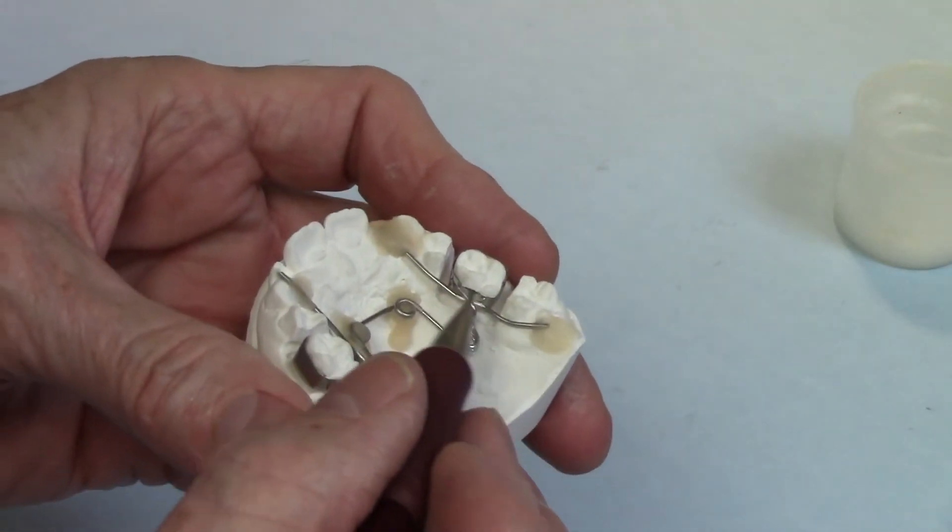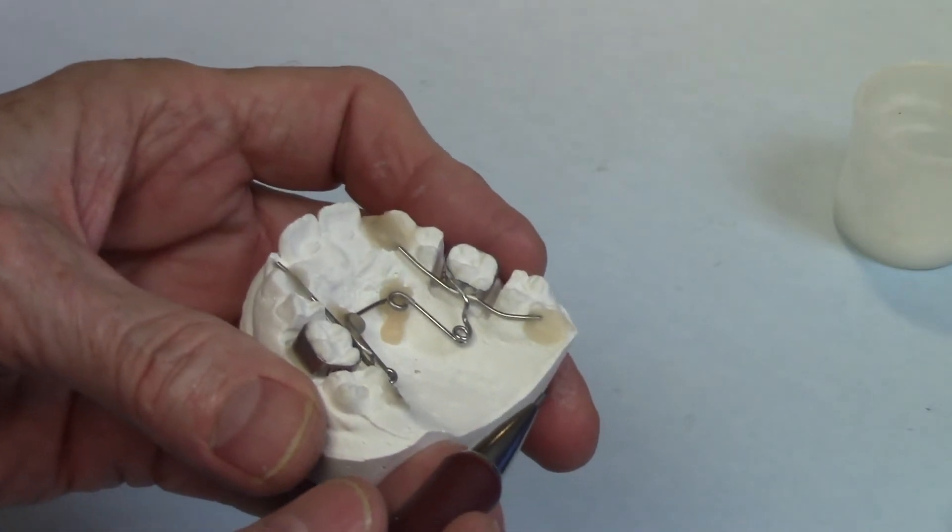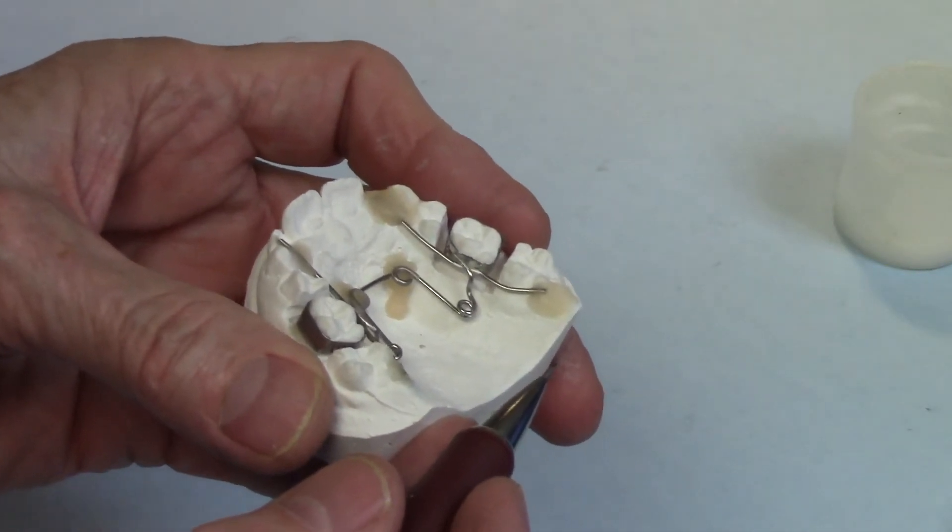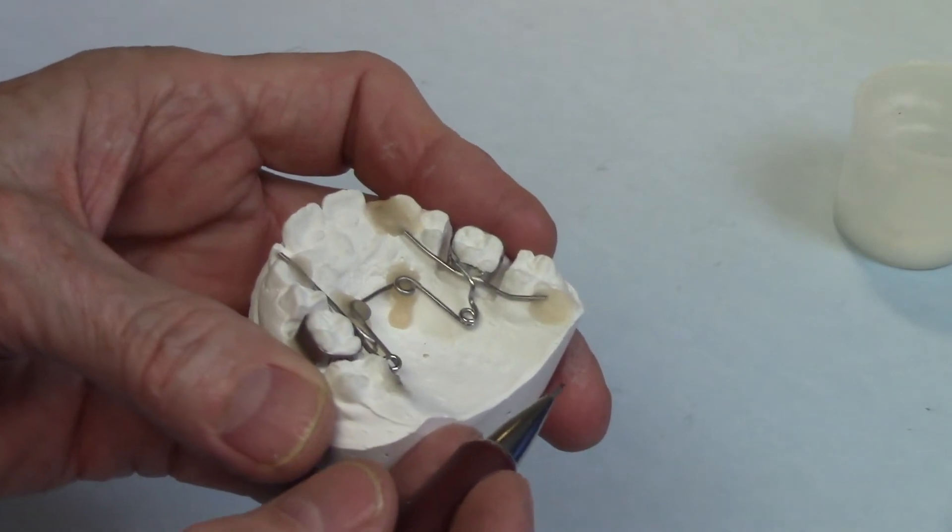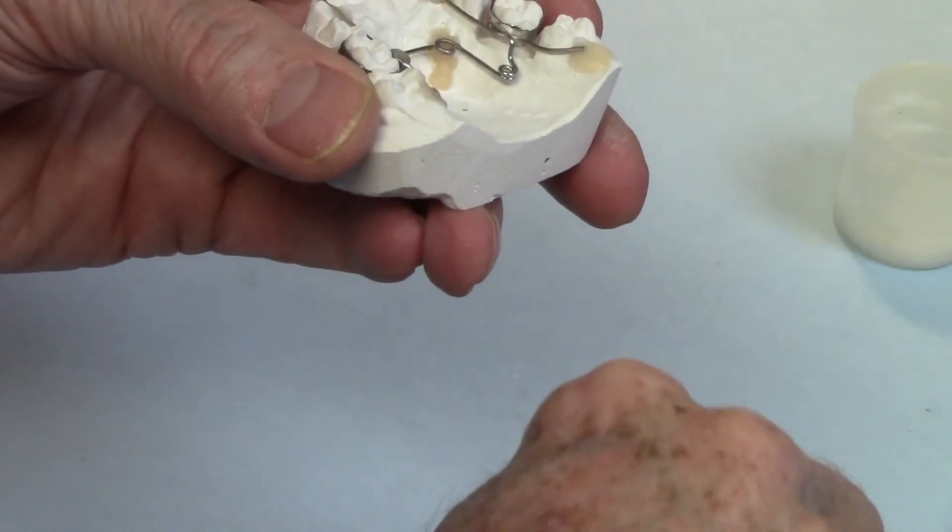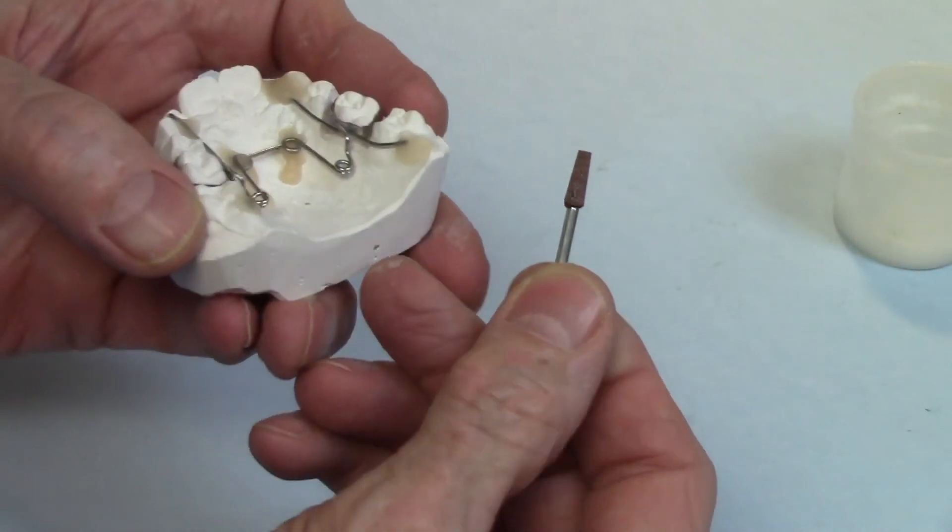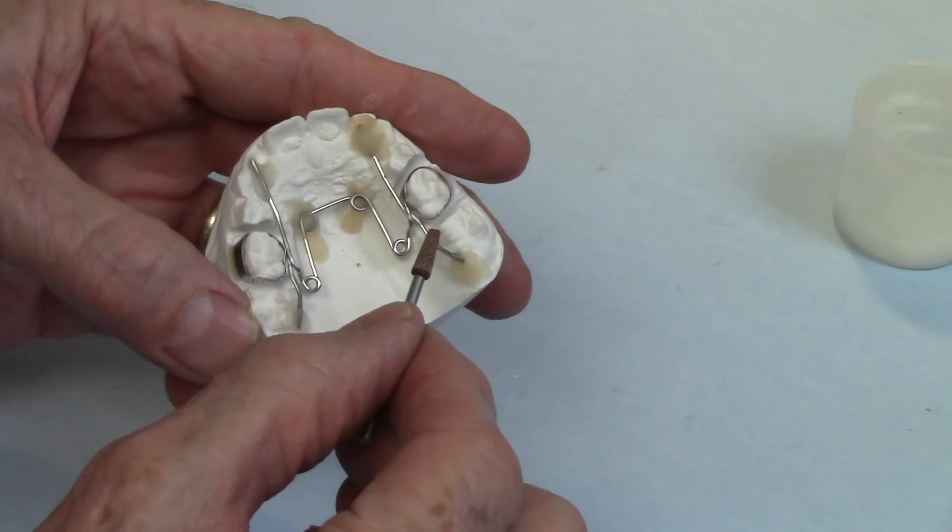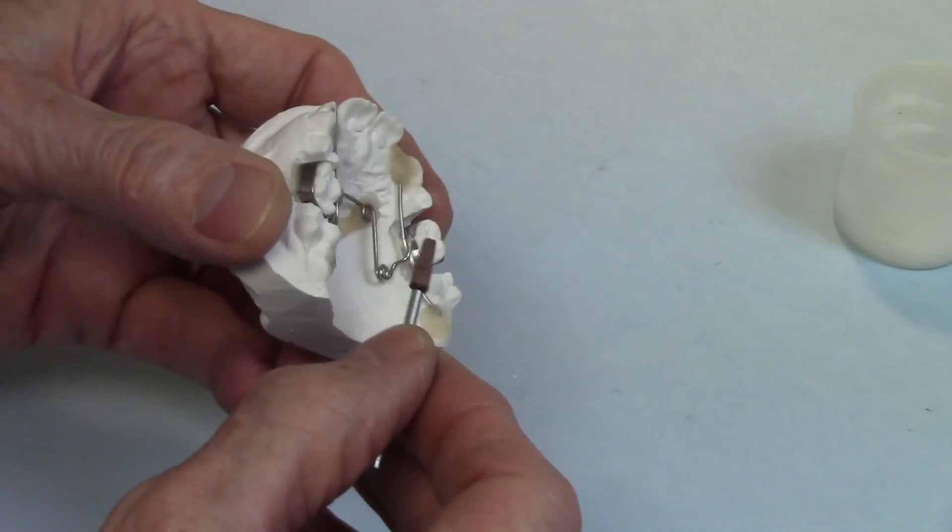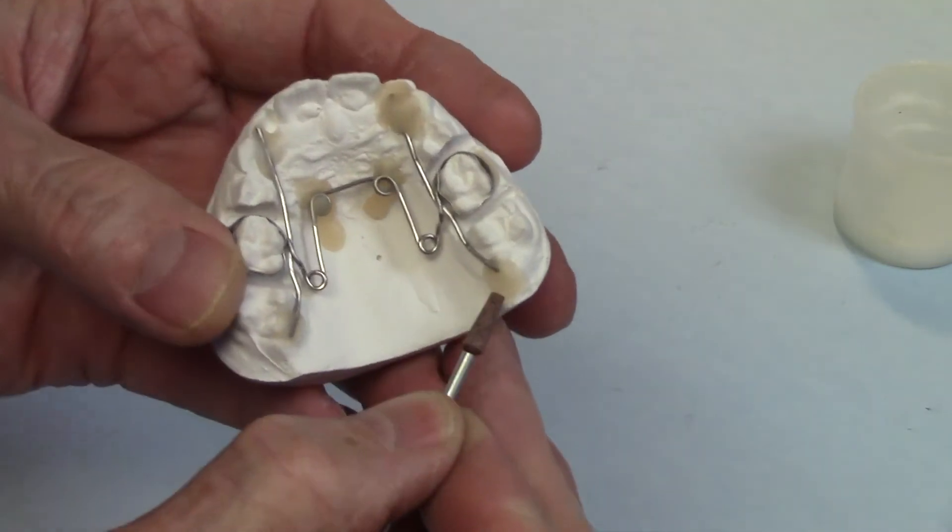It greatly reduces the mechanical adhesion. So if you roughen up these wires, what you're doing is you're removing that burnished surface and you're exposing the subsurface porosity making a really good surface for that mechanical adhesion we talked about in the first video. And the way I do that is I use like a little mounted stone like this on a handpiece and I'll just run it over the wires and in the bands and get them nice and roughened up.